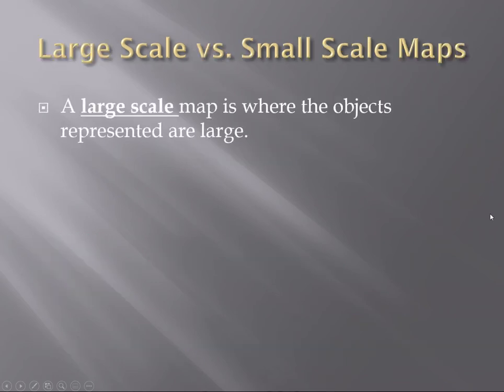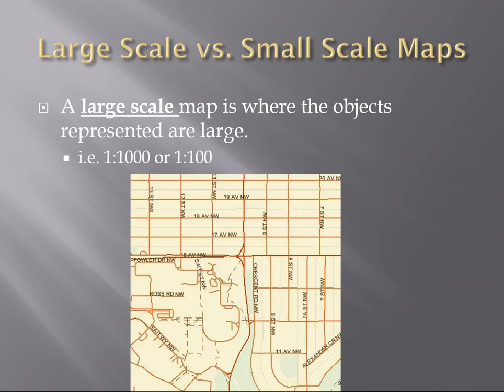So then we get into large scale versus small scale maps. A large scale is when the objects are represented large, like 1 to 1,000 or 1 to 100. This would be an example of a large scale map. We can see a lot of the streets and we can kind of zoom in and we can see some of the parking lot regions and everything at SAIT.